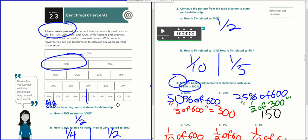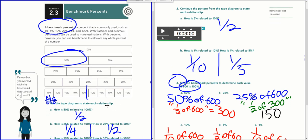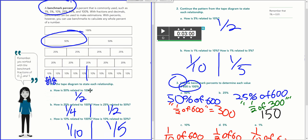I'm here on page 128. So how is 50% related to 100%? Well, it's half of it. And how is 25% related to 100? Well, it takes four of these guys to fit into that 100%, so it's one-fourth.